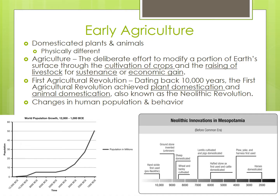The stable food supply allowed some members of these new civilizations to specialize in jobs other than growing food. So we saw full-time blacksmiths and carpenters, soldiers and religious leaders. And with the emergence of specialists, new technologies were created and new innovations implemented.